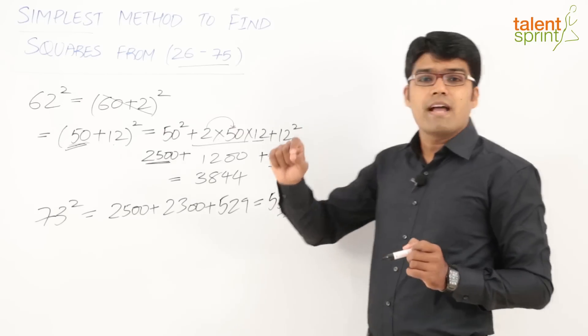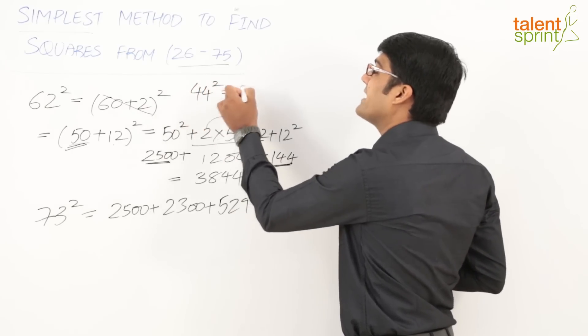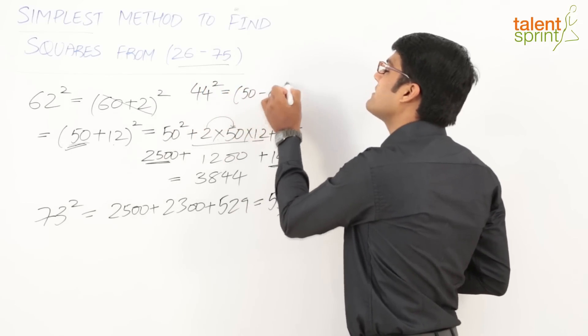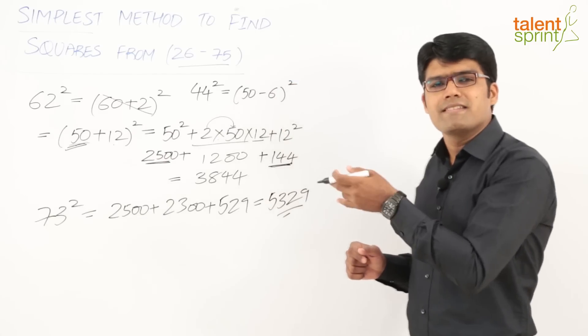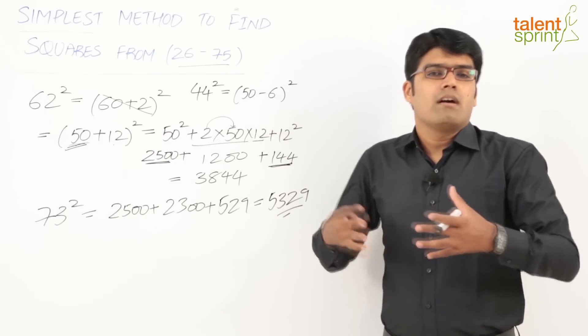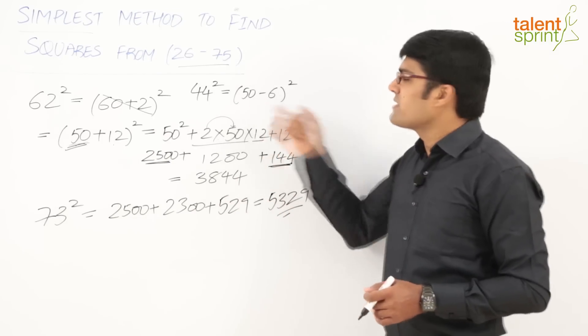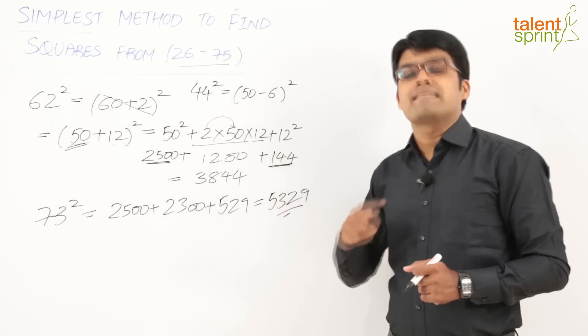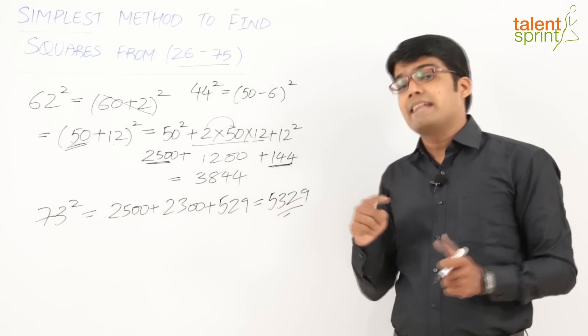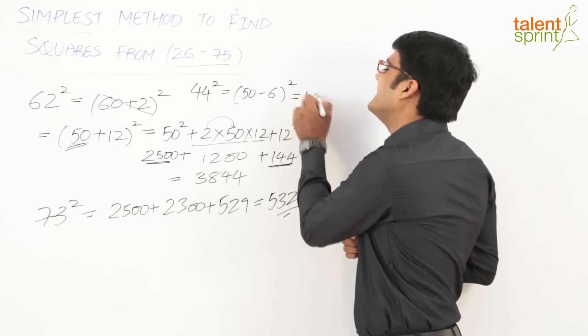Let us take one more example. Let us say we have to find out 44². 44² can be taken as (50 - 6)². Now the only difference here is instead of taking +600, we will take -600. The remaining calculation remains the same. So first term is 2500 - 600 is 1900. 1900 + 6² is 36. So the answer here is going to be 1936.